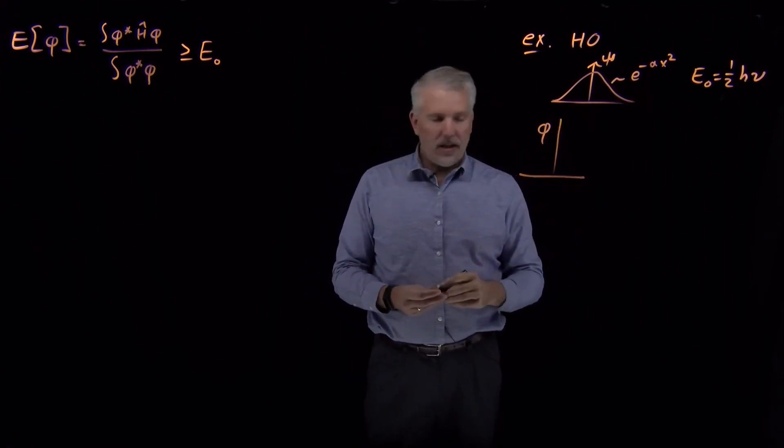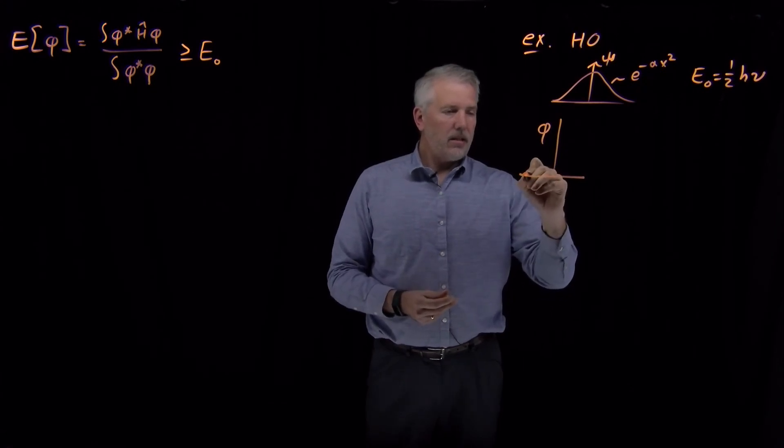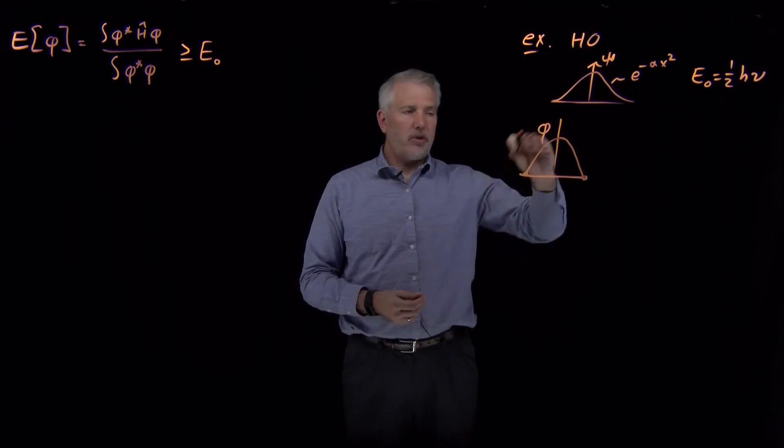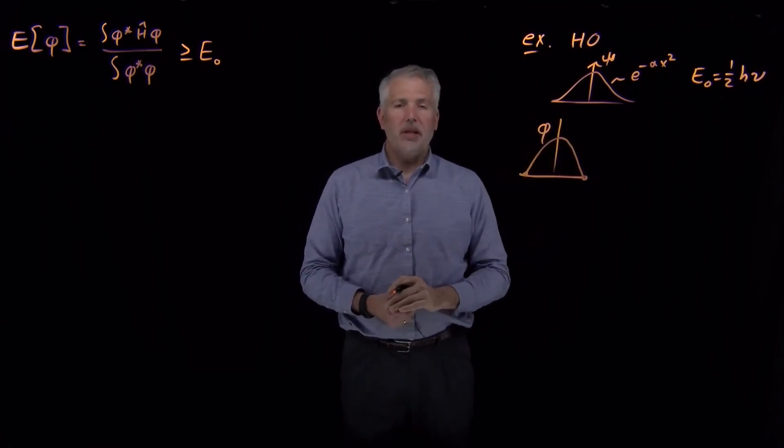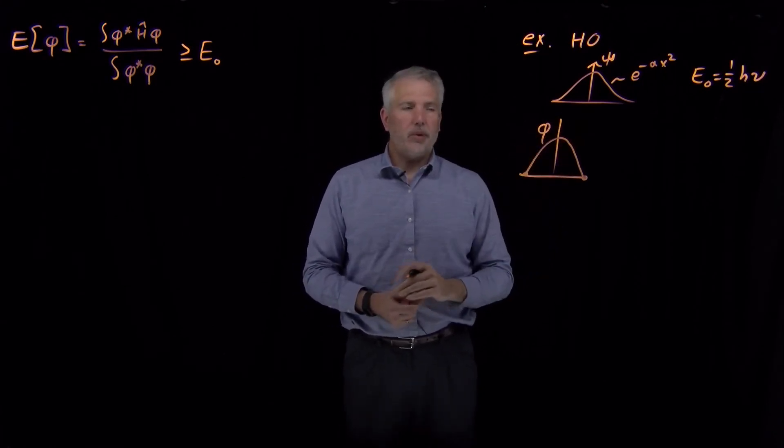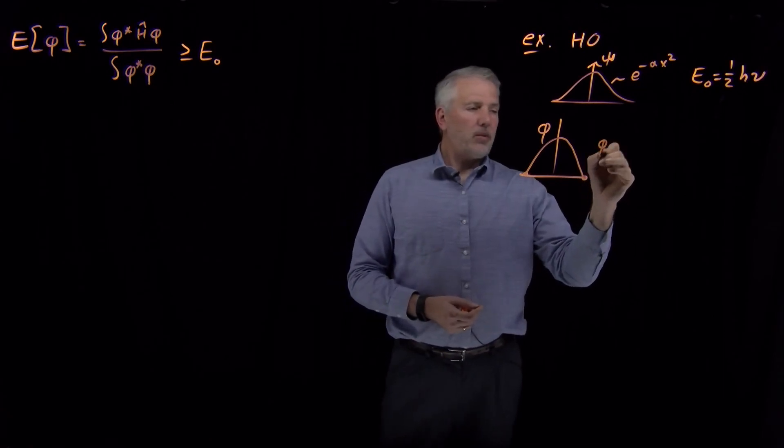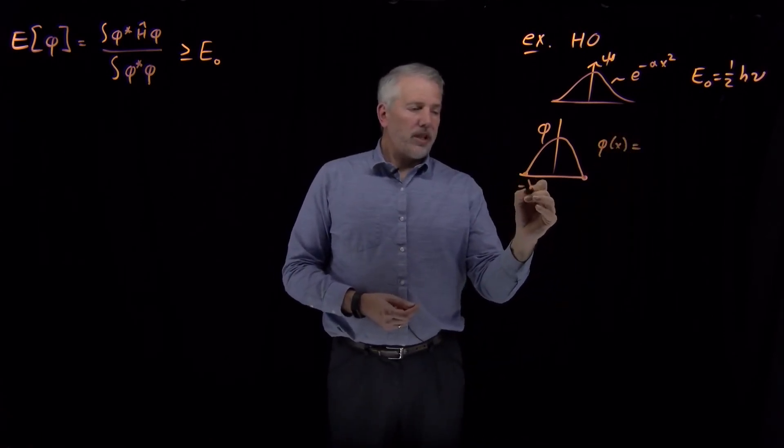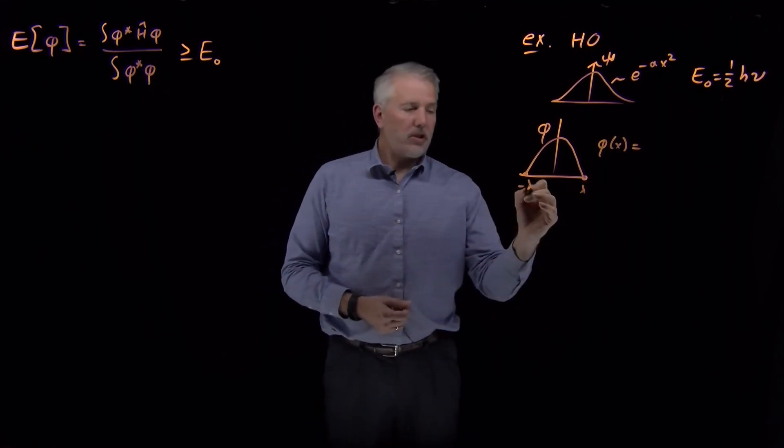We can say instead that, just like we did with an earlier example for the particle in a box, let's say we use a parabola, an upside-down parabola, to represent the shape of this wave function. This wave function has zeros at minus lambda and lambda. I don't know what those values are.